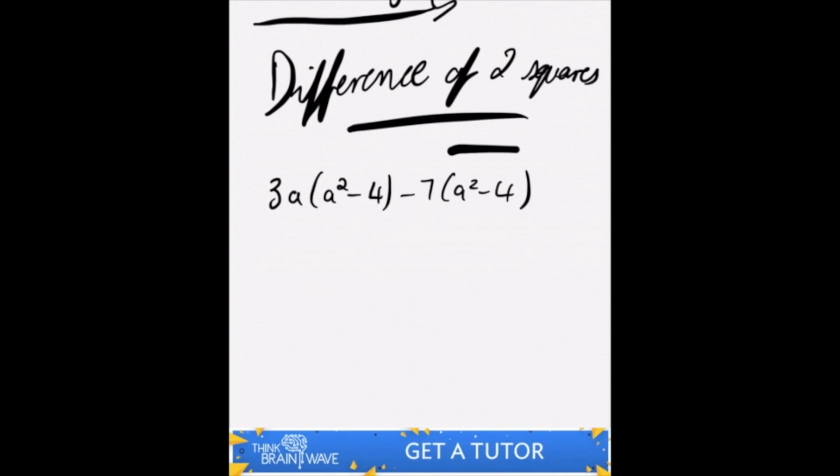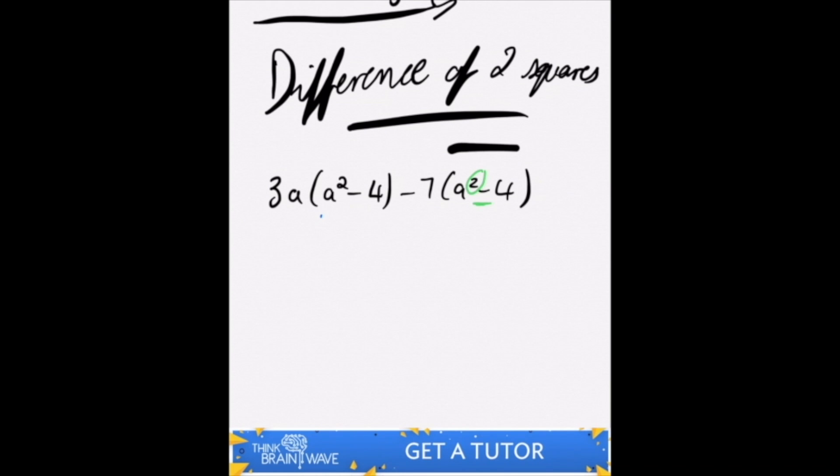Do you notice that you've got a squared minus 4 twice in both brackets, therefore you can group them together. So the fact that you've got a squared sign and a negative sign means you've got the difference of squares. So 4, the square root of 4 is 2, so just remember that for now.